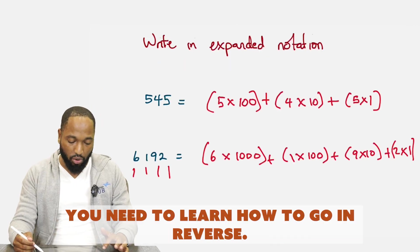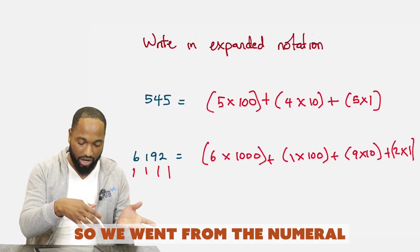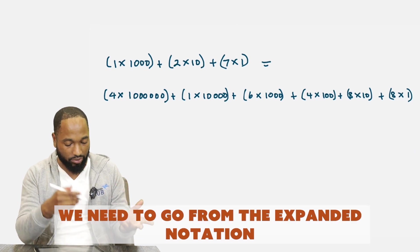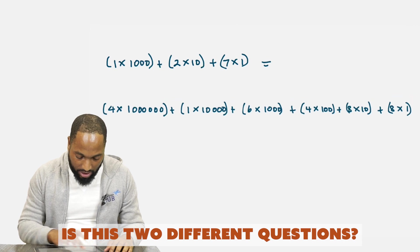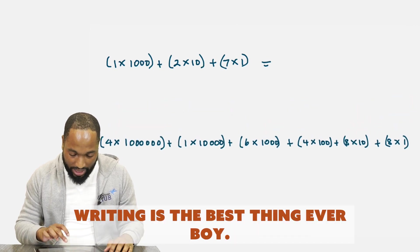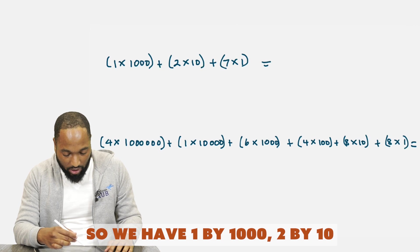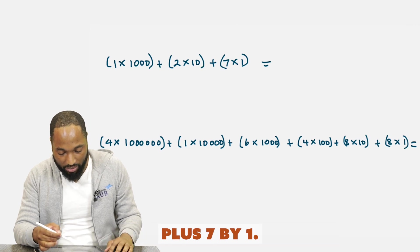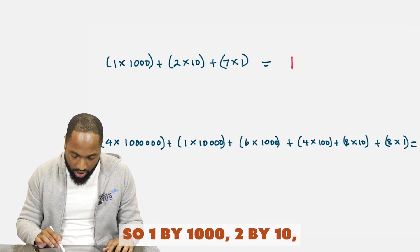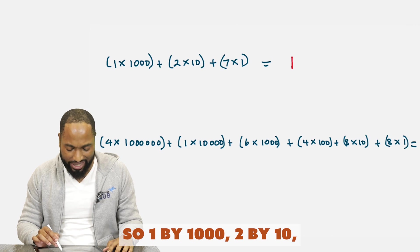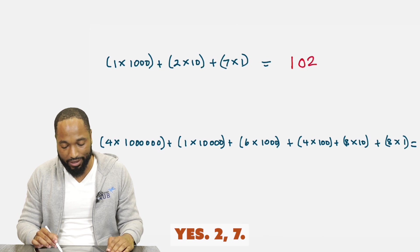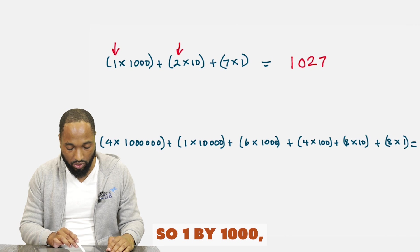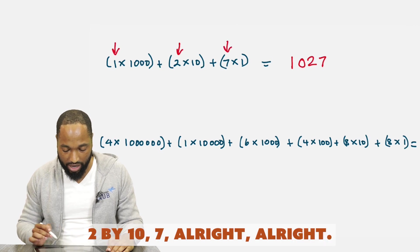And of course, you need to learn how to go in reverse. So we went from the numeral to the expanded notation. We need to go from the expanded notation into the numeral. So we have one by a thousand two by ten plus seven by one. So one by a thousand two by ten. Where's the hundreds? So since we see no hundreds, let's just put a zero. Is that how it works? Yes. Two, seven. So one by a thousand, two by ten, seven.